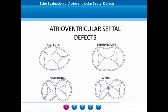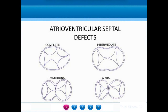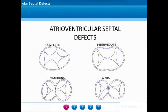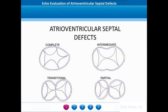Complete defects are characterized by a totally single AV ring with five common leaflets that form the entire AV valve apparatus. In intermediate types, the ring is common but there is a small tongue of tissue connecting the superior and inferior bridging leaflets. Transitional types have two reasonably well-formed rings but also a small tongue of tissue connecting the bridging leaflets. Partial AV septal defects have clearly well-separated AV valve rings.